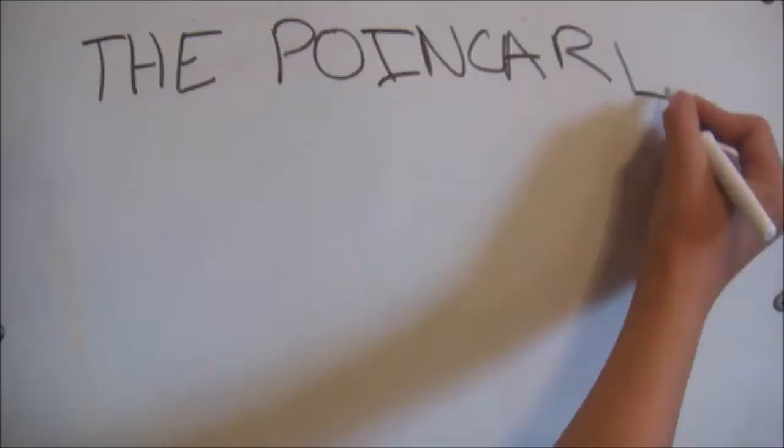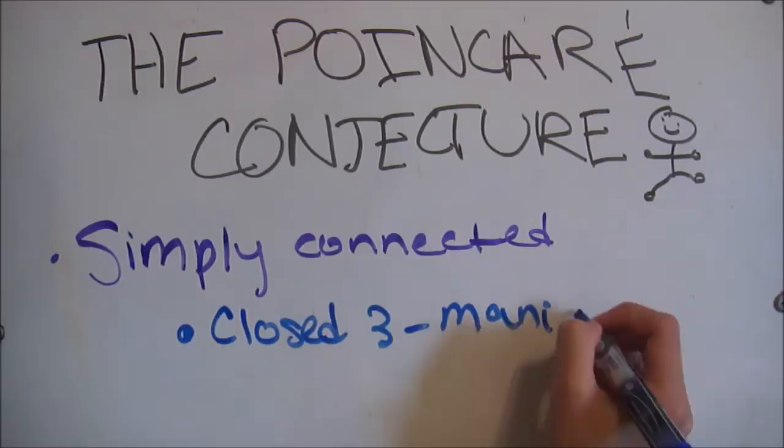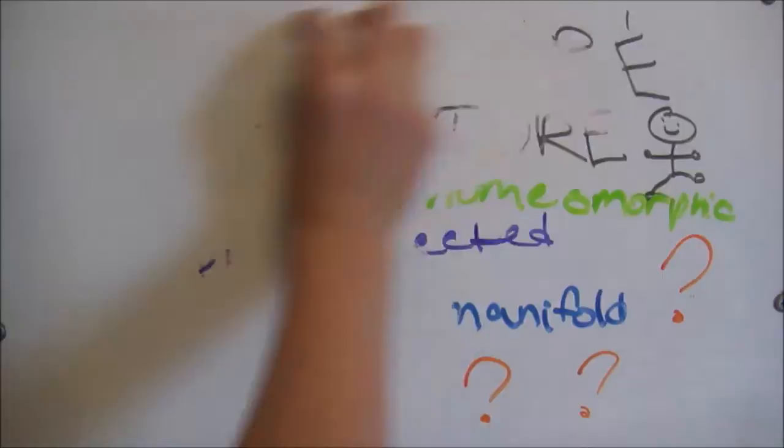Now, onto Henri Poincaré's conjecture. In its original form, it states that every simply connected, closed 3-manifold is homeomorphic to the 3-sphere. What does this mean?